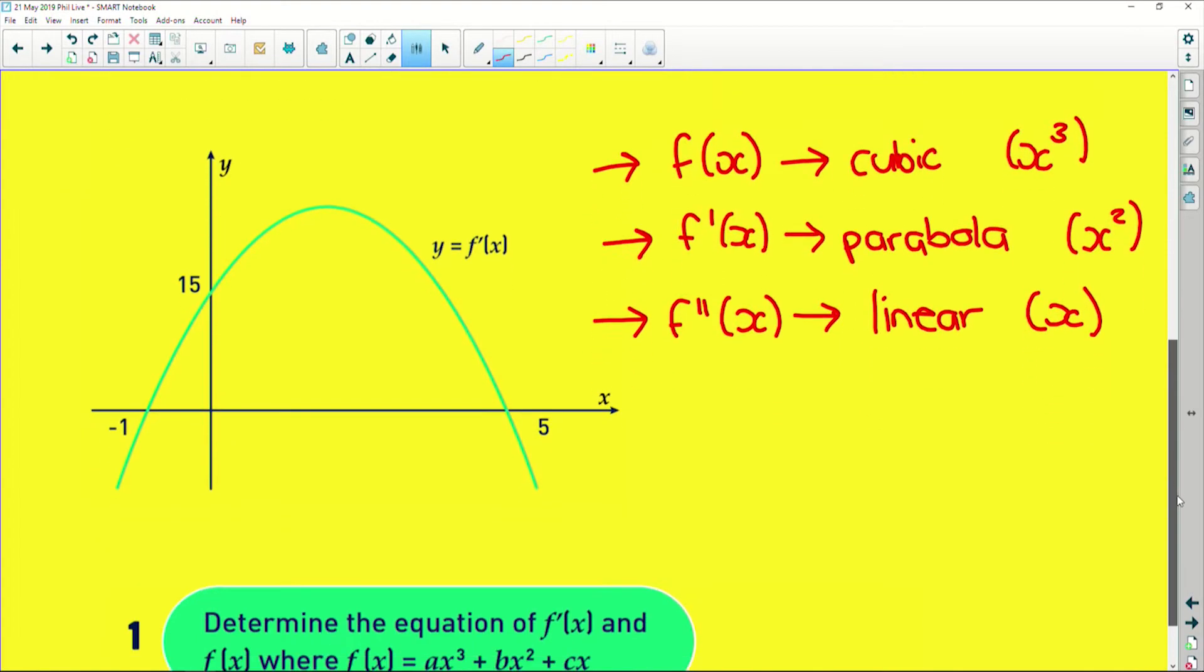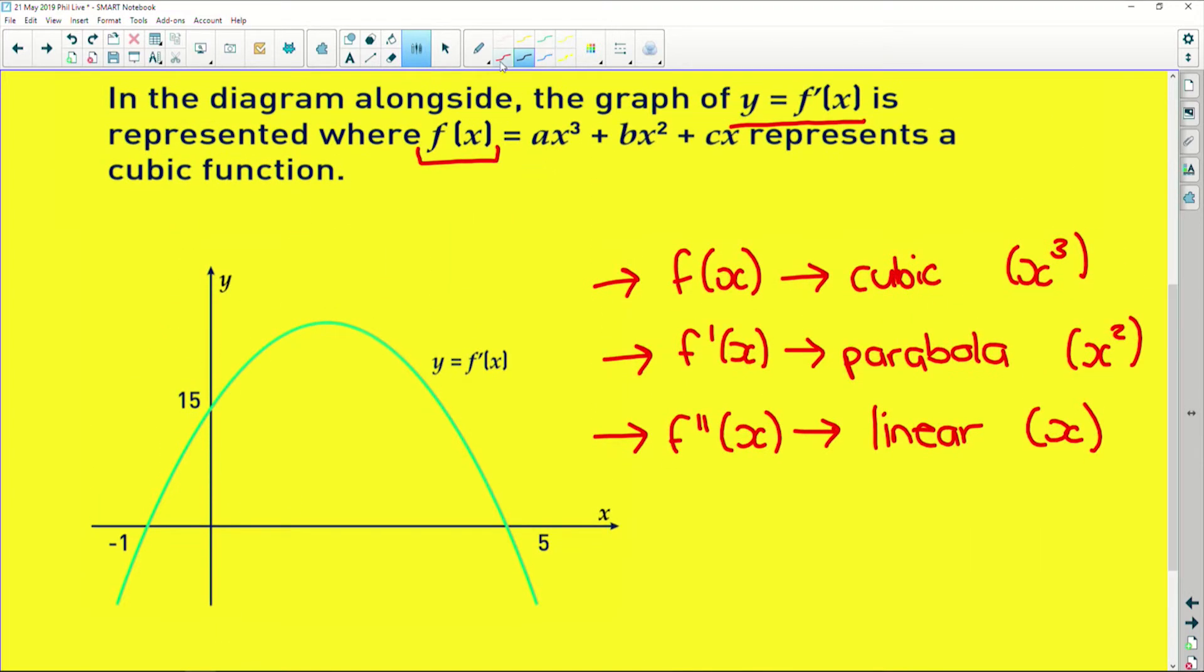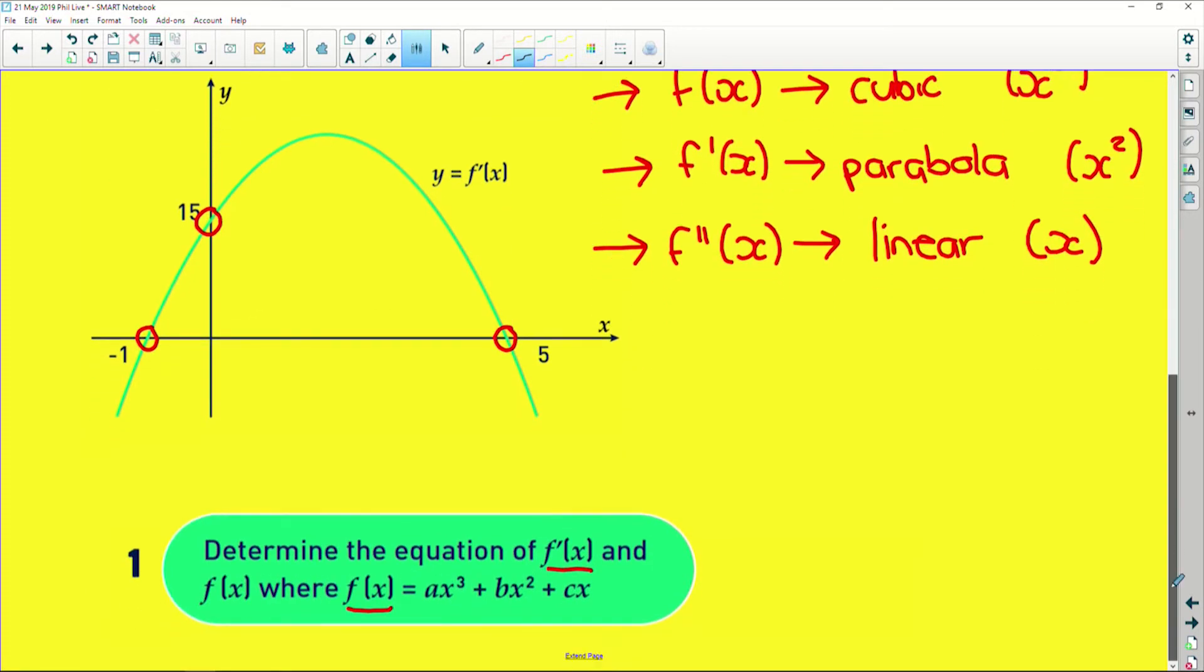So firstly, it says, determine the equation of both the first derivative and the original function where the original function was a cubic. Okay, so where do we even start with this? Well, here we have a lot of missing variables, which doesn't really help us, but they have given us points on the graph. We have two x intercepts, and we have a y intercept. So if we plot those points out, we know that we have (-1, 0), we have (0, 15), and we also have (5, 0). So basically what that means is f prime of -1 and f prime of 5 are the two x-intercepts, and they give us zero, and then it also intercepts the y-axis at fifteen.